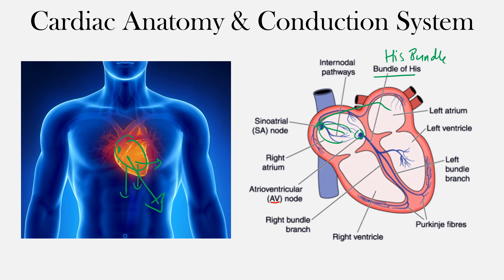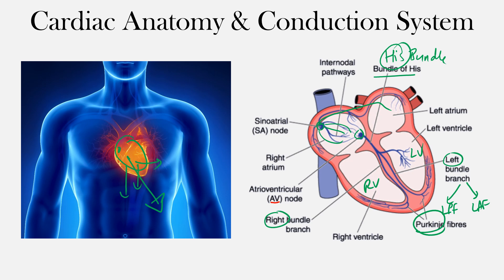From the AV node we have the His bundle, or bundle of His, and then we begin depolarizing the ventricles — this is called the His-Purkinje system. We have the left bundle branch depolarizing the left ventricle and the right bundle branch depolarizing the right ventricle. The left bundle branch subdivides into the left anterior fascicle, supplying the anterior and superior left ventricle, and the left posterior fascicle, innervating the posterior and inferior left ventricle. From there, conduction goes to the Purkinje fibers and then to the cardiomyocytes.